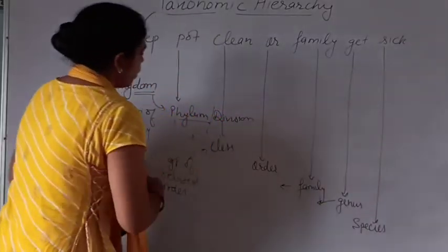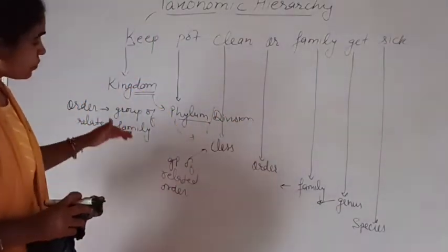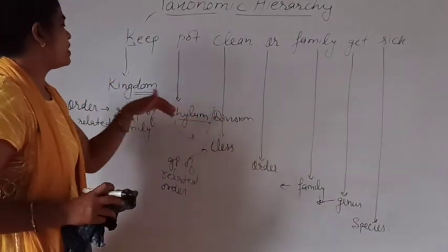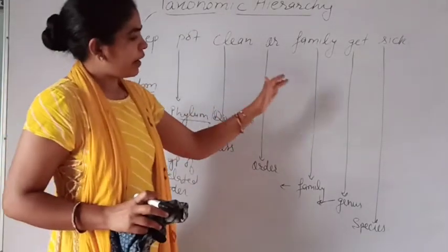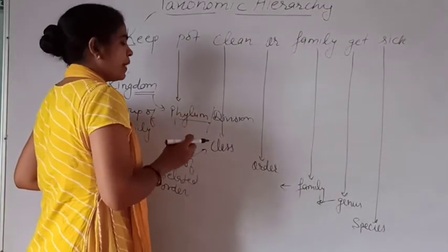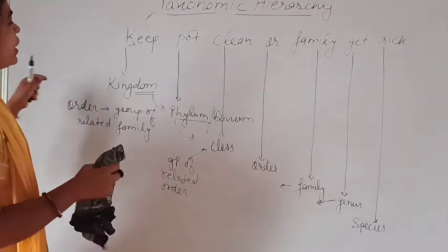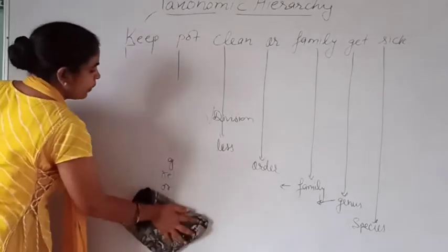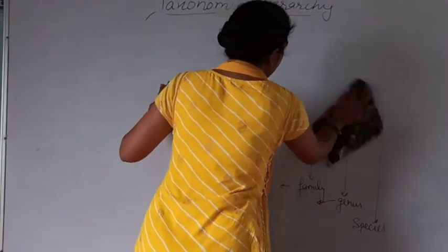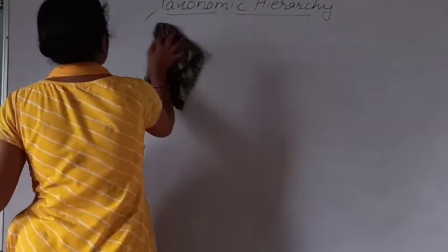So all these different taxonomic categories — Species, Genus, Family, Order, Class, Phylum or Division, and Kingdom — are called taxonomic categories or taxons, and together they are referred to as taxa.